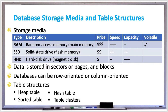The three most important types of media for databases are RAM, or random access memory, also called main memory, which is the fastest, most expensive, has a smaller capacity, and it's volatile.